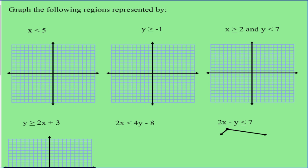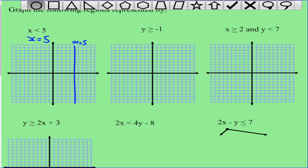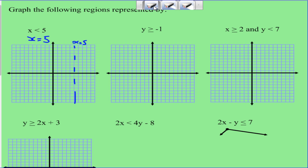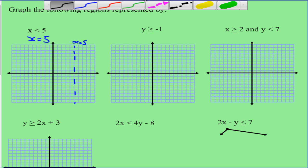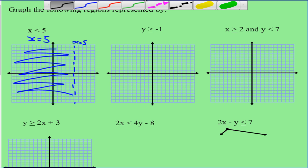Example one: graph x is less than 5. We treat it like an equal sign and draw the vertical line x equals 5. Since the inequality is strictly less than, we make it a dashed line — the line itself is not included. On the left of the line x is smaller than 5, so we shade to the left. That's all we need to do.